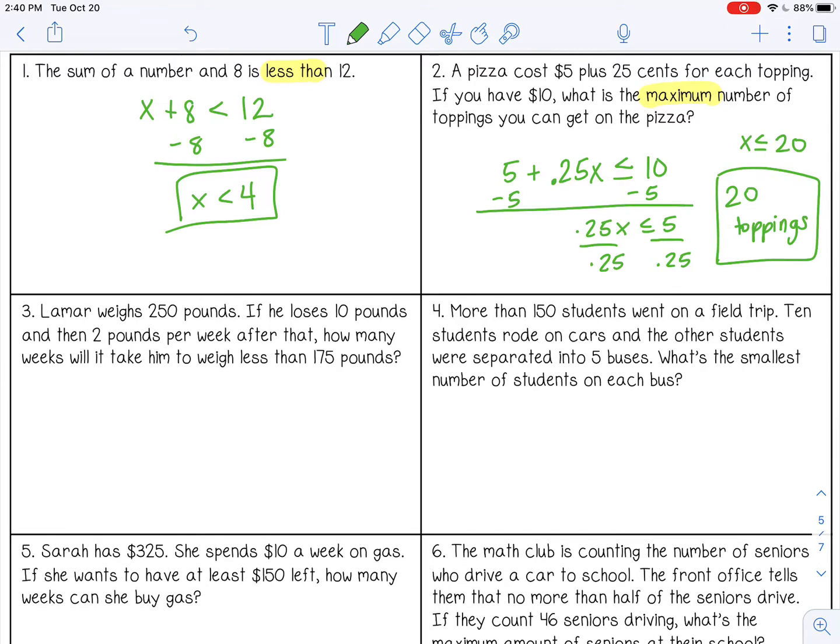Number three. Lamar weighs 250 pounds. If he loses 10 pounds and then 2 pounds per week after that, how many weeks will it take him to weigh less than 175? So he starts off at 250 and he loses 10 pounds. So that means he's really starting out at 240. And then he's losing, so we're subtracting weight, 2 pounds per week. We know per means to multiply. So 2 per week. And we're asking about weeks. So weeks is our x, our variable that we're trying to find. And we want to see how long it's going to take him to weigh less than 175.